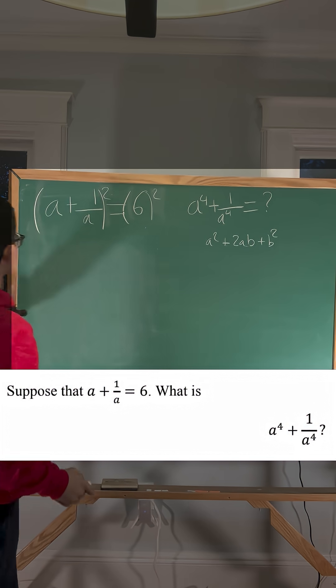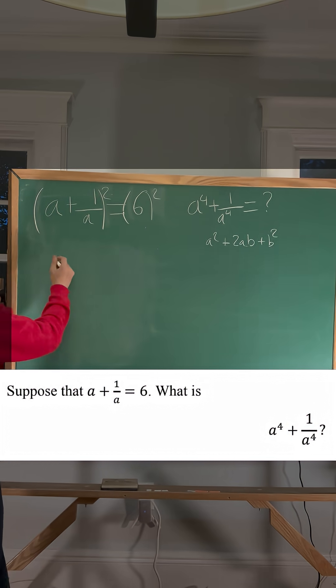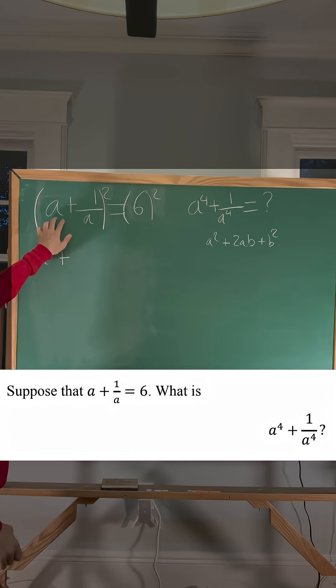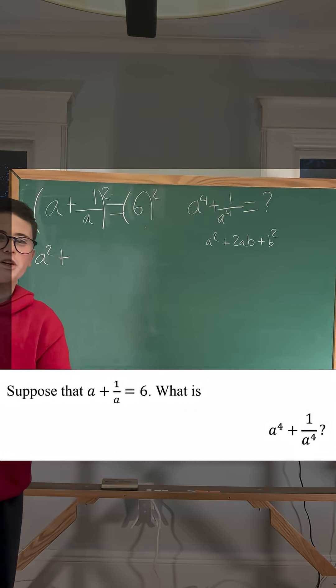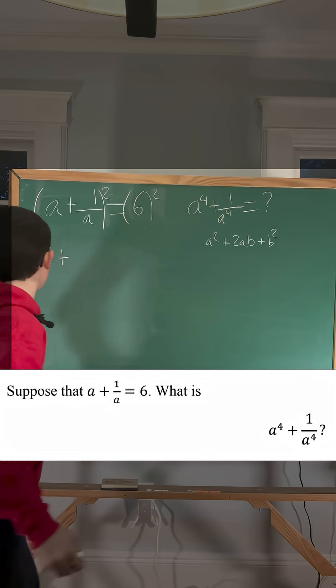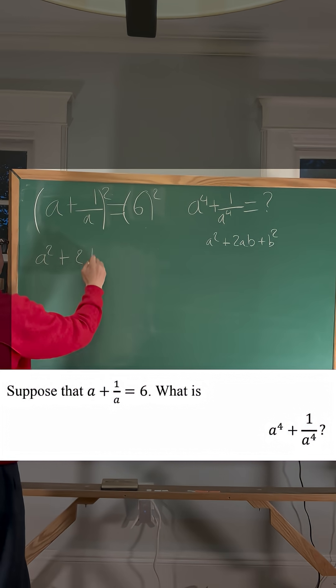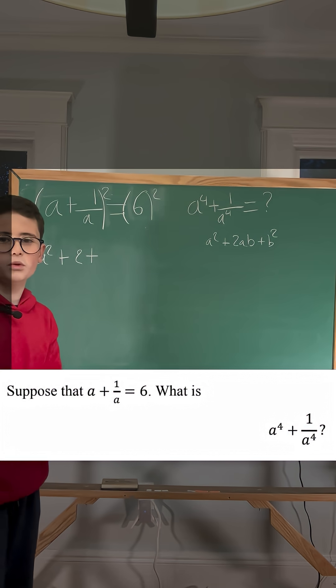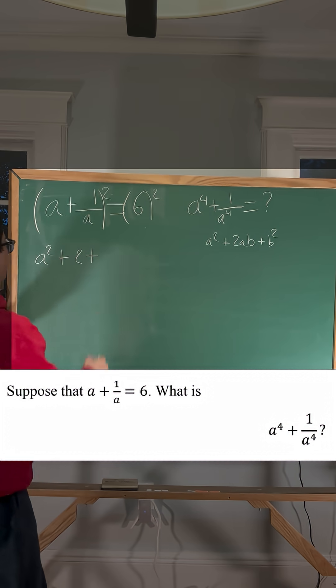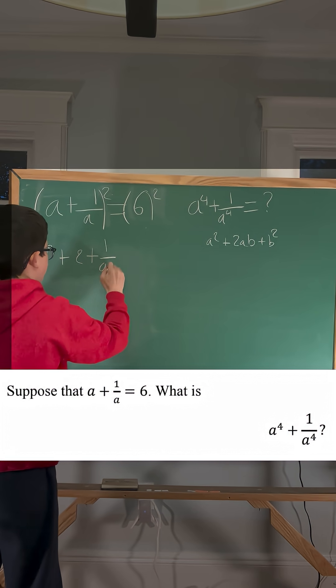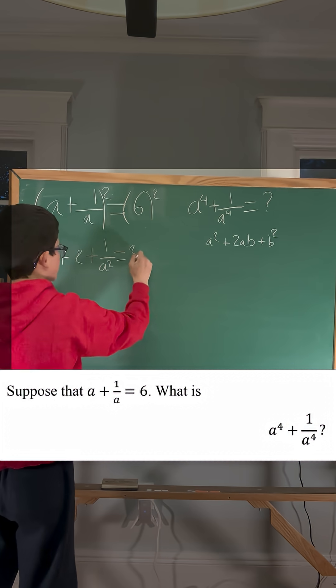If we apply this formula to this squared problem, it would be a squared plus, so a times 1 over a is a over a, which equals 1. So we could just do 2 times 1. So 2 plus 1 over a times 1 over a is 1 over a squared, so this would be 1 over a squared, equals 6 times 6, which is 36.